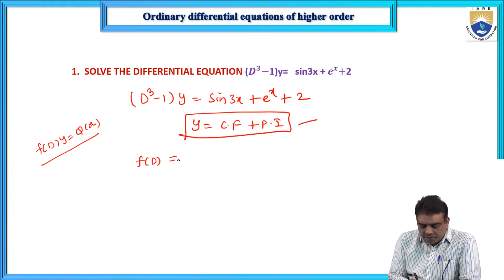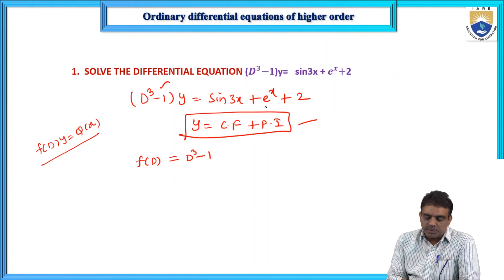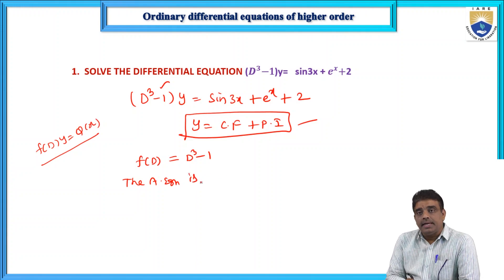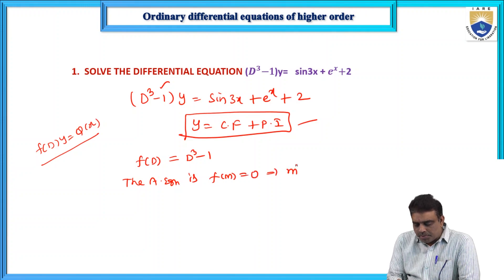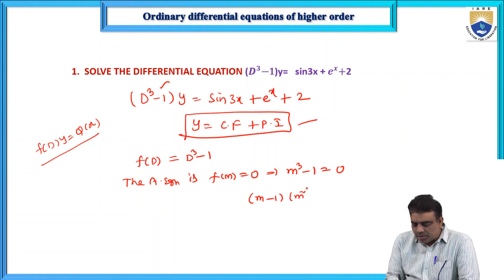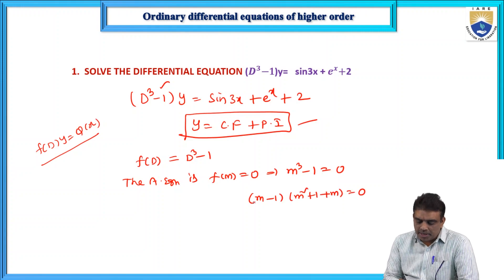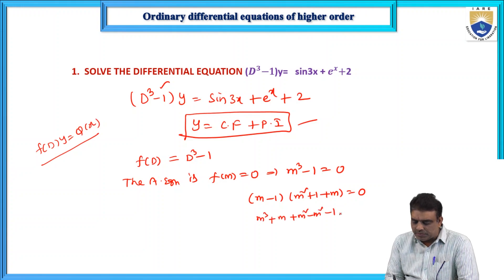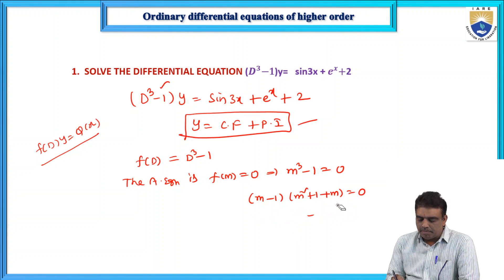Here f(D) is D³ - 1. The Q(x) is sin3x + eˣ + 2. The auxiliary equation is obtained by replacing D by m, that is f(m) = 0, or m³ - 1 = 0. Using the a³ - b³ factorization, I can write this as (m - 1)(m² + m + 1) = 0.